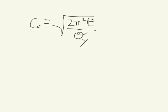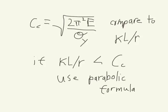And just one more thing to remember when you're doing this problem is that the Cc you're comparing your KL over r to, you can find your Cc using this equation here. And once you find the Cc, you can compare it to your slenderness ratio, KL over r. And if you find that your slenderness is less than Cc, you can use a parabolic formula. And if it's greater, use the Euler formula.